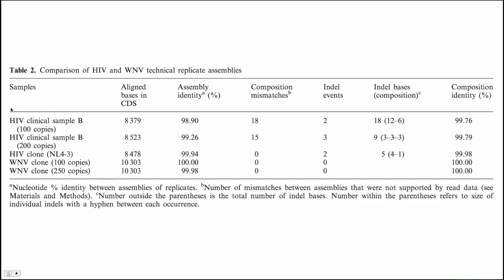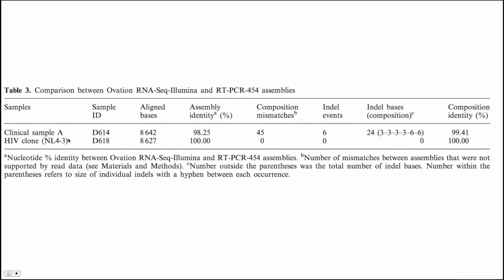In Table 2, we're comparing the technical replicate assemblies for HIV and West Nile samples to assess reproducibility. Even with 100 copies of HIV clinical sample RNA, the assemblies are about 99% identical, and for West Nile they're about 100% identical. In Table 3, we compare the Ovation RNA-Seq Illumina data with our standard RT-PCR 454 assemblies for HIV clinical samples and clones — and the assemblies are very similar. The Ovation RNA-Seq is 99.4% similar to the RT-PCR assembly for a clinical sample, and the NL4-3 clones are 100% similar.